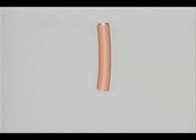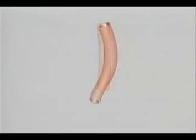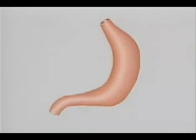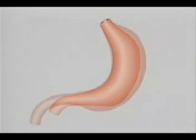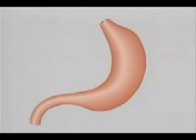The foregut starts as a straight tube. As it develops, it rotates on its long axis, lengthens in a double curve, and expands to become the stomach and the first part of the duodenum.